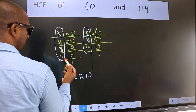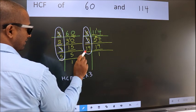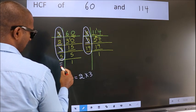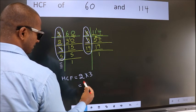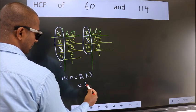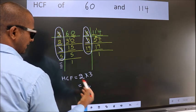Next number 5. Do we have 5 here? No. No more numbers have been left out. So our HCF is 2 into 3. 6 is our HCF.